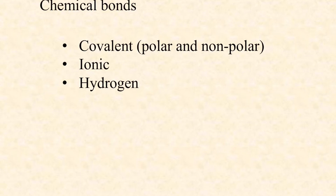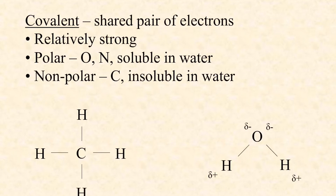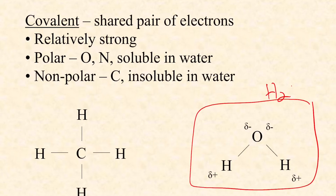A covalent bond is simply formed when two atoms share a pair of electrons. These are relatively strong bonds, particularly in organic compounds. Polar covalent bonds result when one of the two atoms holds onto the electrons more of the time than the other — in other words, it's a more electronegative atom. For example, in water (H2O), oxygen is highly electronegative.